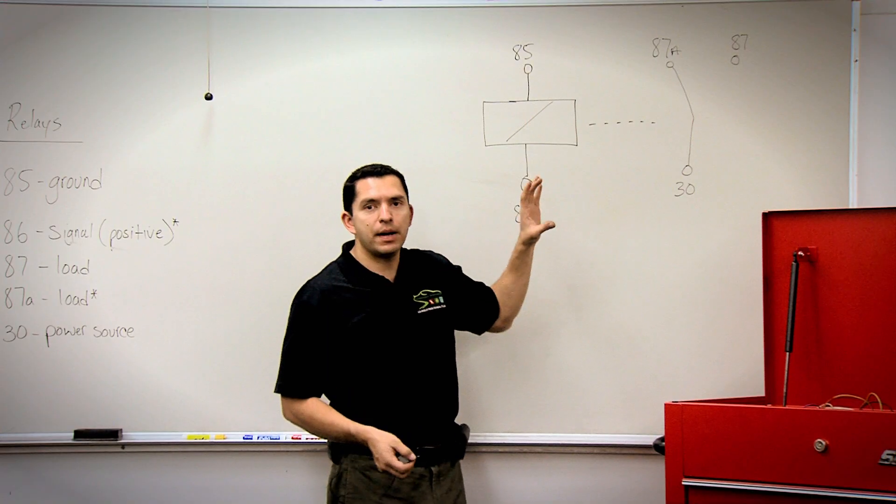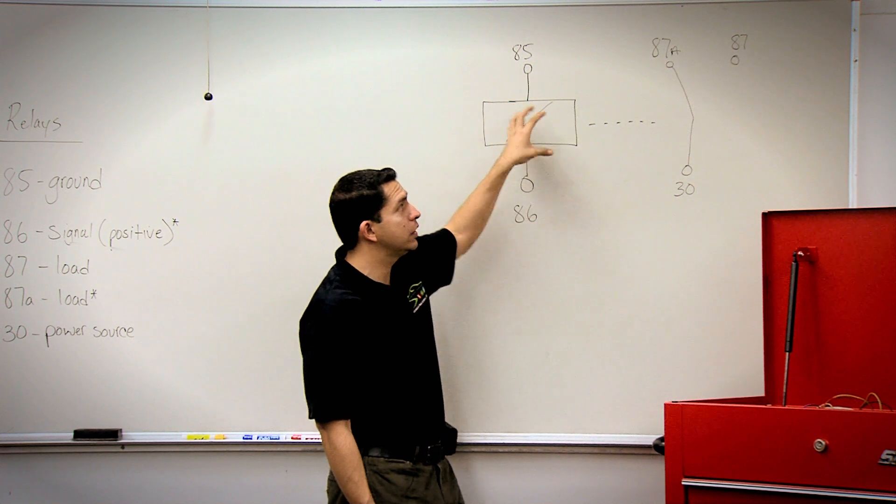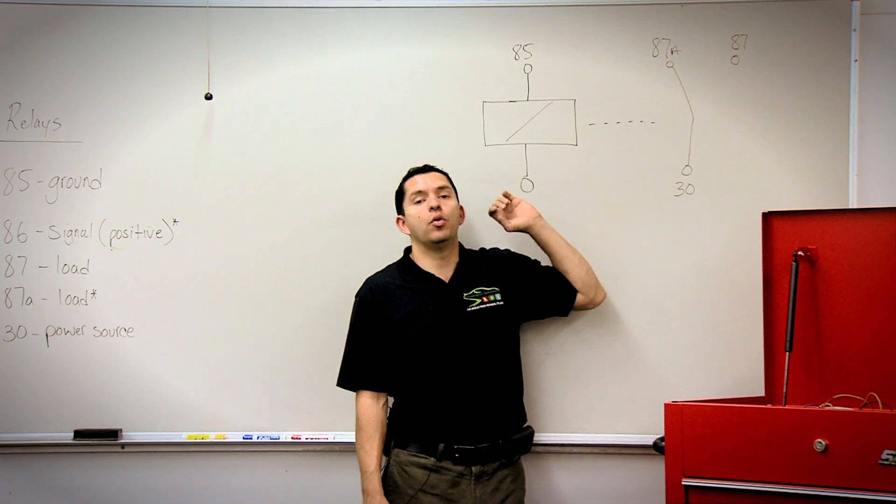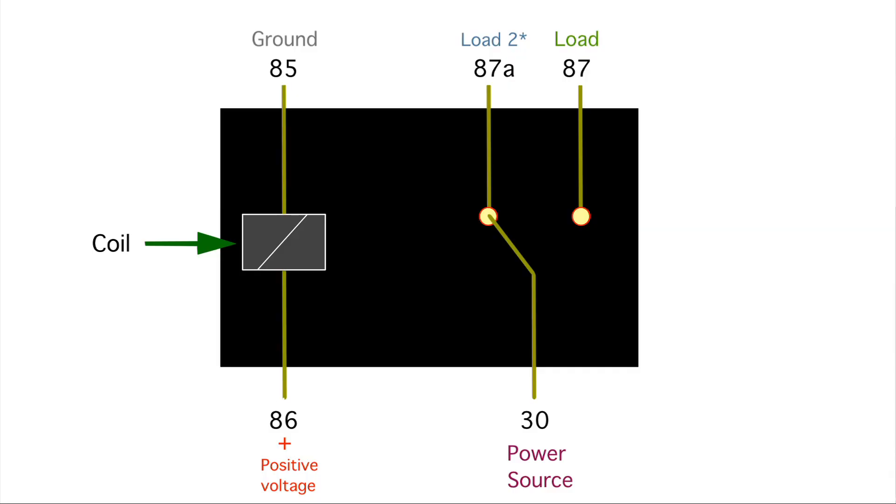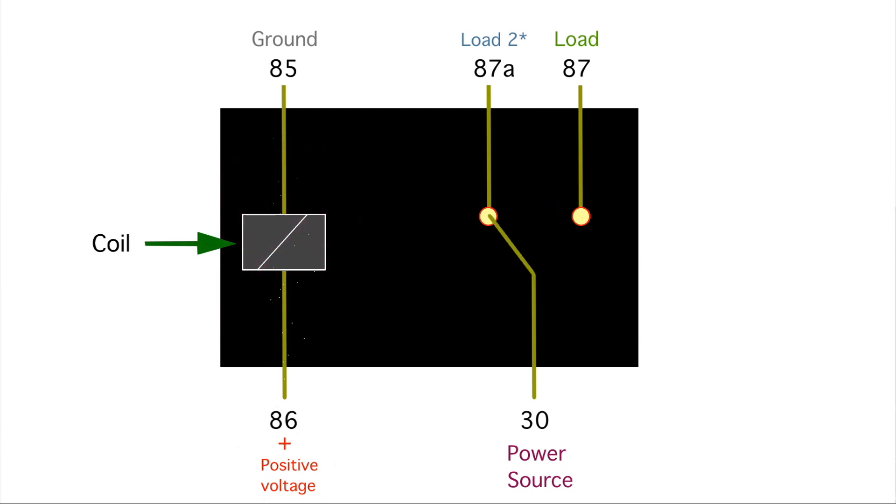Remember that this coil creates a magnetic field, and the only thing this magnet could do is attract. Bottom line: 85 and 86 become energized, you get power between 30 and 87. De-energize the relay, now you have power between 30 and 87A.